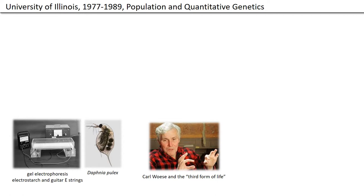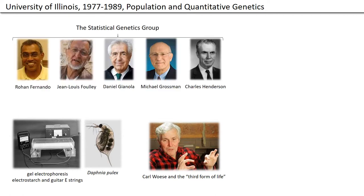Carl Woese was right down the hall from me learning how to sequence ribosomal RNA and applying it to deep phylogenetic problems. You all know about the third form of life that came out of this work. Down the road, the animal science department had the best statistical genetics group in the world at the time. We spent an enormous number of hours together poring over all the foundational papers in the field from Pearson to Fisher and so on.